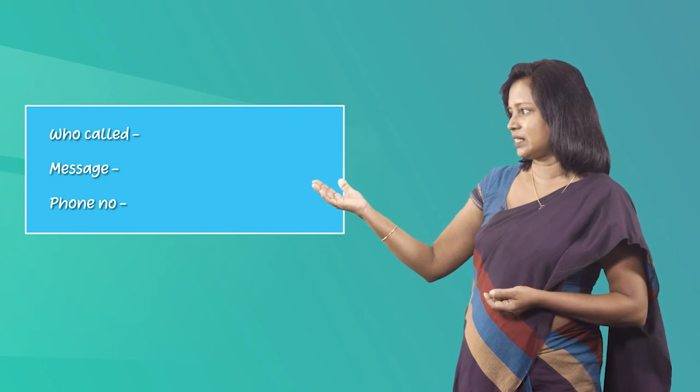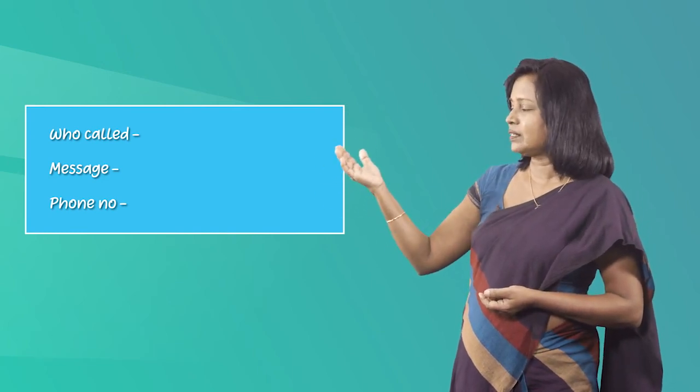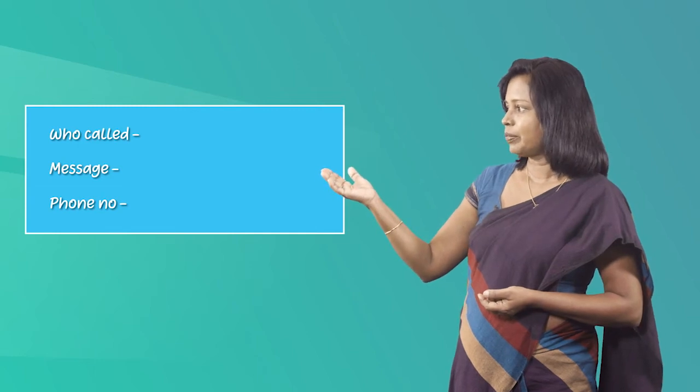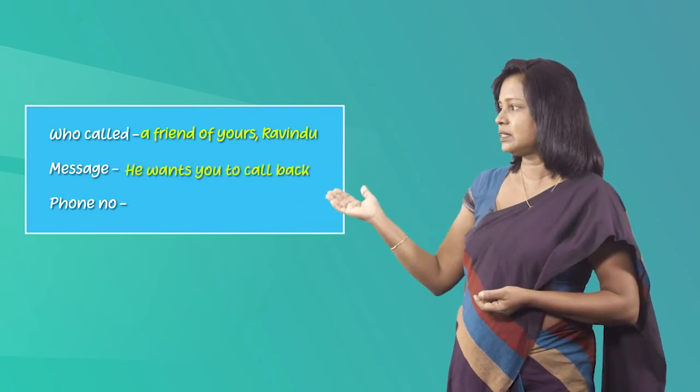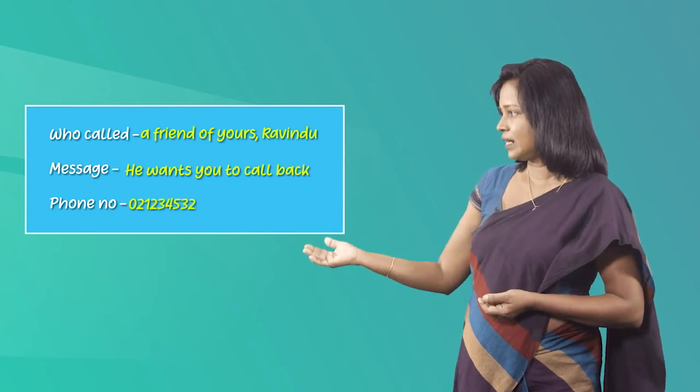Children, now think of a situation where you take a message for another person over the telephone. You need to convey this message correctly, so it's easier if you write down this information. Here you are transferring the information in a spoken text into a written text. Look at this telephone message — it says who has been calling: a friend of yours, Ravindu. Then you write the message that Ravindu wants him to call back, and then the telephone number. So here you have transferred information from a spoken text into a written text. Now let's do a similar activity.